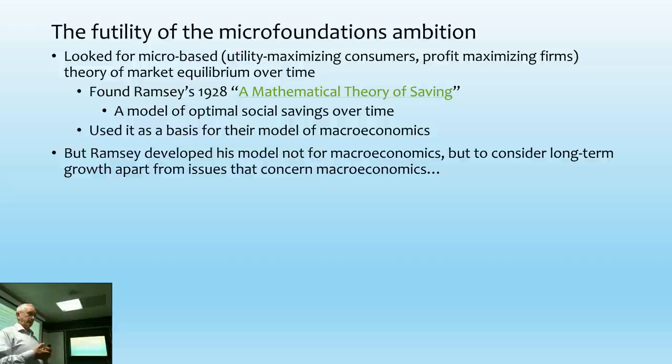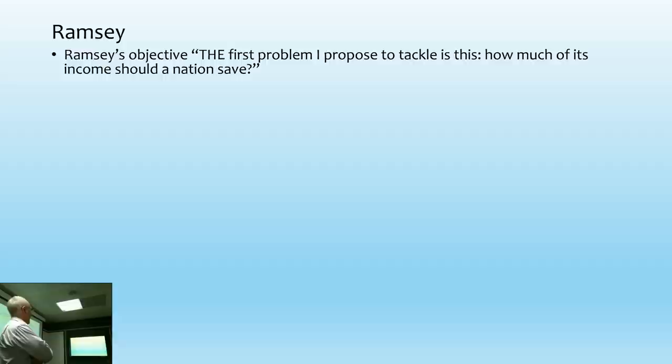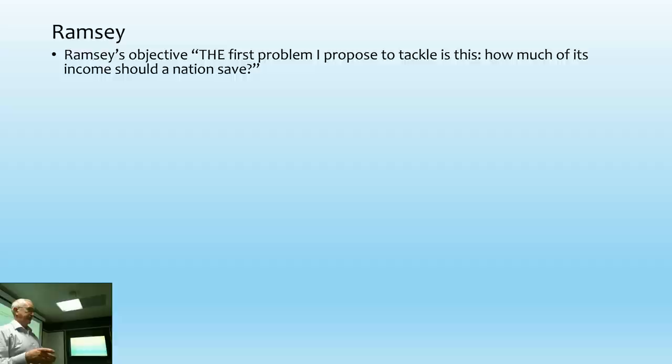Ramsey's objective was: how much of its income should a nation save? Think about that statement. How would a Keynesian phrase it? 'How much of a country's income should a nation invest?' What's going on straight away is the belief that what you save is invested — you're living in a Say's Law type of world, where if you don't consume, you're investing. So you're looking for an optimal rate of capital accumulation, assuming that savings causes the accumulation. Ramsey made a number of simplifying assumptions.